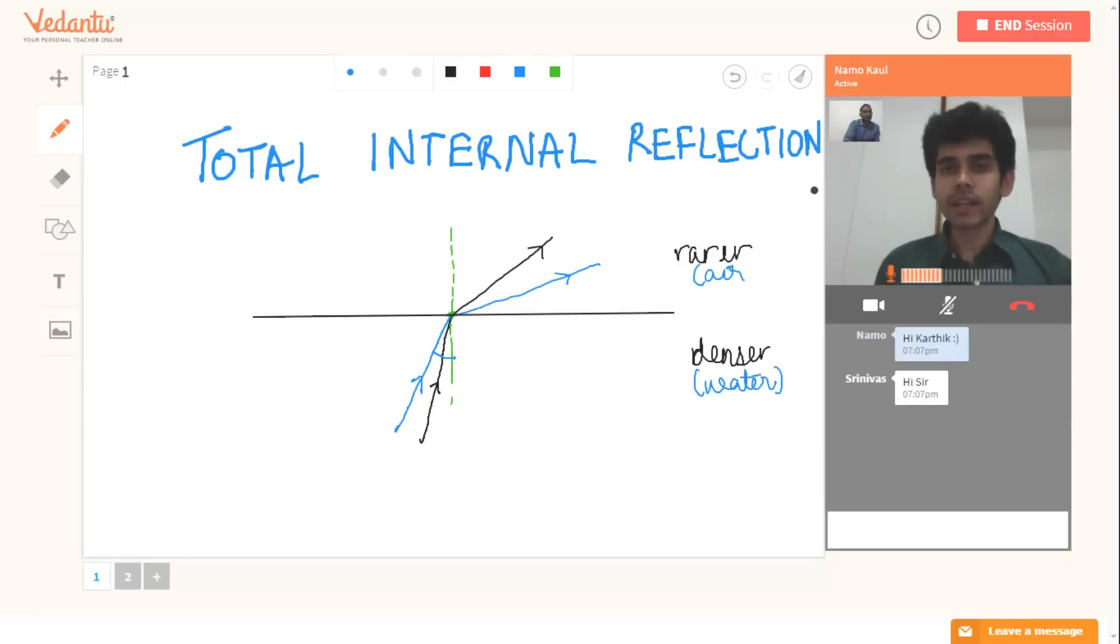So do you agree that there will be an angle, an angle greater than these two, for which the ray would go perpendicular to the normal? Yes sir. So do you realize this? So this would be the case of the critical angle.